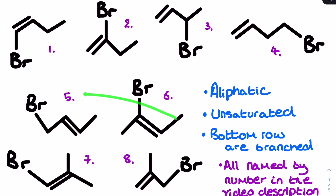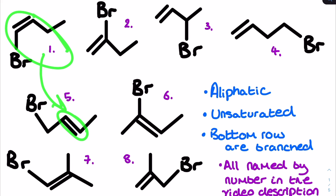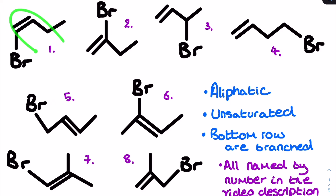For structures five and six, I took structure one and moved the double bond up to between carbons two and three. I'm not putting it between carbons three and four because that just gives structure one flipped over. By moving the double bond to between C2 and C3, I create a different structural isomer, and then by moving the bromine again from that position I create a sixth structural isomer.